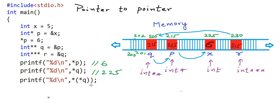Now I want to print **q — dereferencing twice. First I get *q, which is address 225, and then I look at the value at address 225, so **q will be 6. We could have avoided writing the parentheses and just written **q, which would mean the same thing. But it is good practice to use parentheses with the asterisk operator because when we are also using other operators, we may not be sure about precedence and want to avoid unwanted behavior.